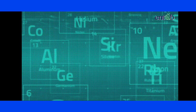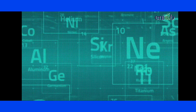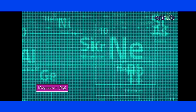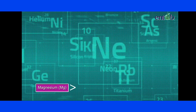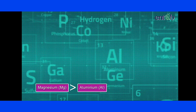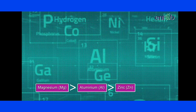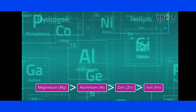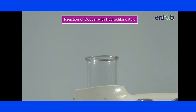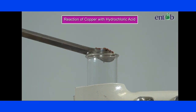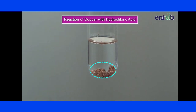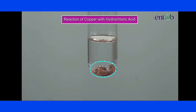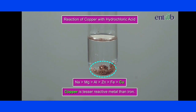Thus the reactivities of these metals in decreasing order is: magnesium, which is more reactive than aluminium, which is more reactive than zinc, and zinc is more reactive than iron. Look carefully — copper metal is not reacting with dilute hydrochloric acid at all, making it a lesser reactive metal than even iron.